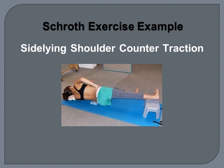Side-lying shoulder countertraction is a great first home exercise for many patients. It's supported but also active — it helps engage the quadratus lumborum to help decrease lateral deviation in the lumbar spine, and it can also help stretch the concavity in the thoracic spine while working on postural control and core stability. This is also a great position for relaxing and watching TV, as you can get the spine in a supported, symmetrical position using folded towels or rice bags.